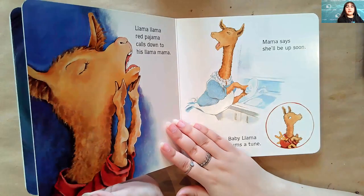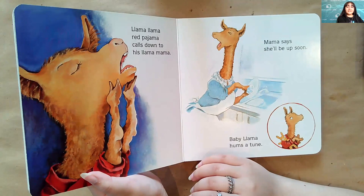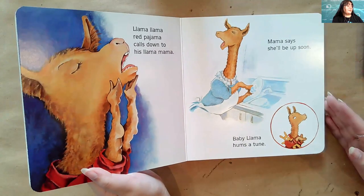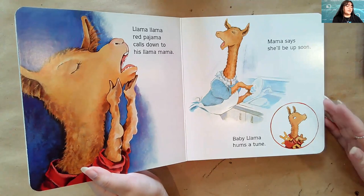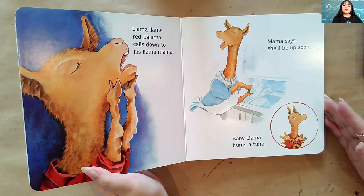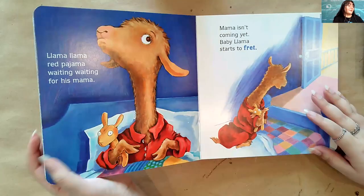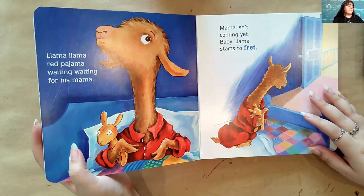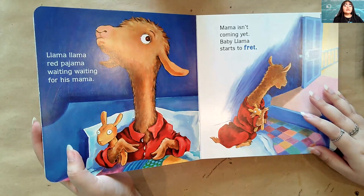You know, baby Llama's right. You need a nice drink. You can't go to sleep dehydrated. Llama Llama Red Pajama calls down to his Llama Mama. Mama says she'll be up soon. Baby Llama hums a tune. Llama Llama Red Pajama waiting, waiting for his mama. Mama isn't coming yet. Baby Llama starts to fret.